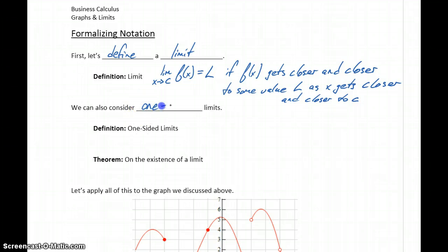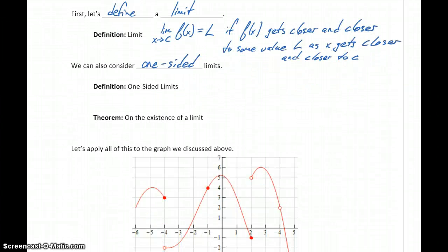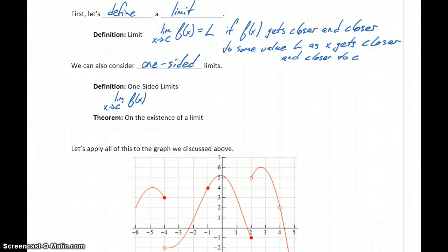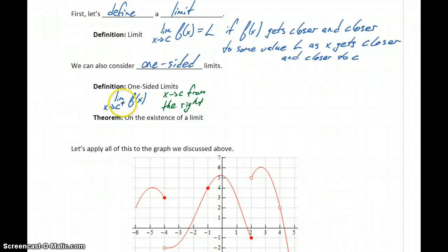When we consider limits, we can also consider one-sided limits, which we informally talked about in the last video — looking at what's happening as we approach from the left and from the right. We can consider the limit of f of x as x approaches c with a little plus sign, meaning x approaching c from the right. One way to think of it: the plus indicates positive infinity, so you start way off to the right and approach that point.